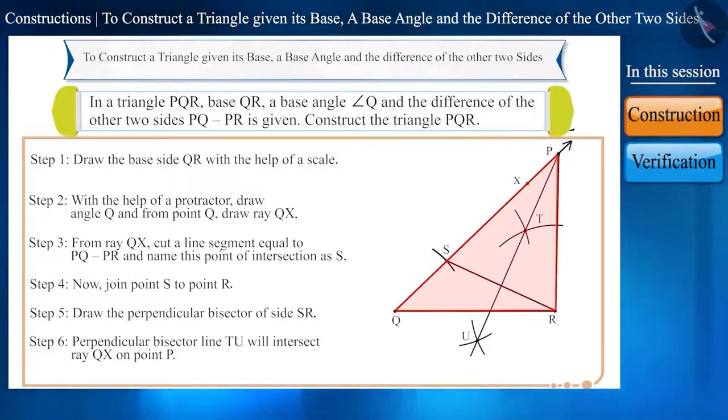Thus friends, the constructed triangle PQR is the same triangle which we wanted to construct. Here, you can see that side PQ is greater than side PR, and the difference of PQ minus PR is represented by QS.